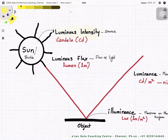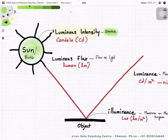First, we are going to discuss luminous intensity. Luminous intensity talks about the source — whenever we hear the term luminous intensity, we immediately relate it to the source, which might be the sun, a bulb, or even a candle. The unit for luminous intensity is candela, also called the candle power of a source. Candela is the basic unit for all units in illumination.